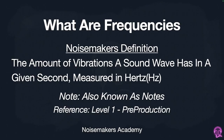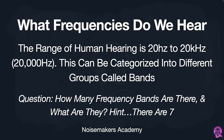So what are frequencies? Frequencies are the amount of vibrations a sound wave has in a given second. It's typically measured in hertz, also known as notes — we'll talk more about this in level one pre-production. Our human range of hearing only goes from 20 hertz to 20 kilohertz, or 20,000 hertz. This can be categorized into different groups called bands.